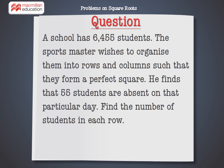A school has 6,455 students. The sports master wishes to organize them into rows and columns such that they form a perfect square. He finds that 55 students are absent on that particular day. Find the number of students in each row.